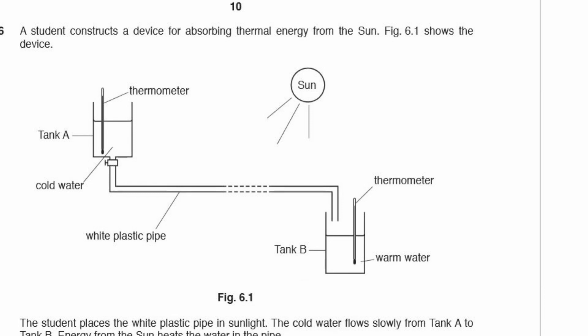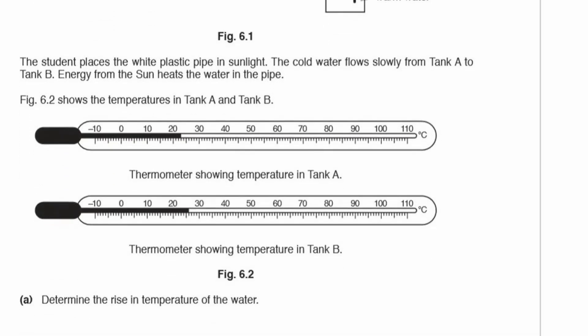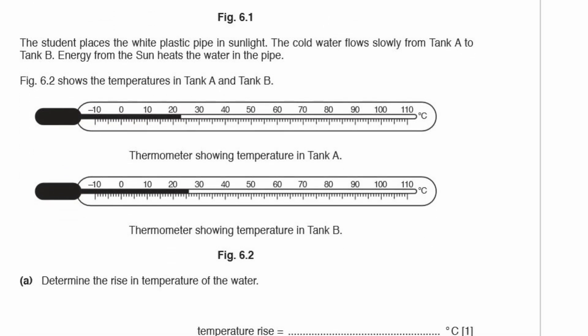Question 6: a student constructs a device for absorbing thermal energy from the sun. The student places the white plastic pipe in sunlight. Cold water flows slowly from tank A to tank B, using energy from the sun to heat the water in the pipe. Determine the rise in temperature of the water. It looks to be about 23 degrees Celsius going in and about 26 degrees Celsius coming out, so the water rise is 26 minus 23, which is 3 degrees Celsius.